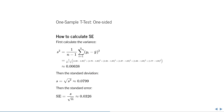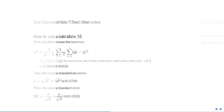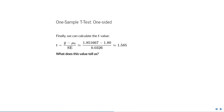The sample standard deviation is then simply the square root of this, and the standard error is this square root of the variance divided by the square root of the sample size. Finally, we can calculate the t-value by filling in each of the values that we computed so far, and we end up with a t-value of about 1.585.